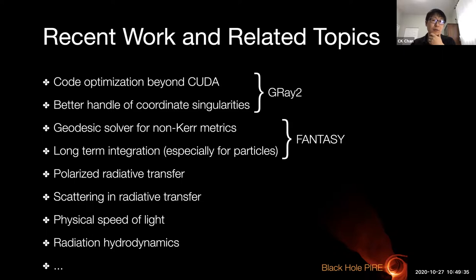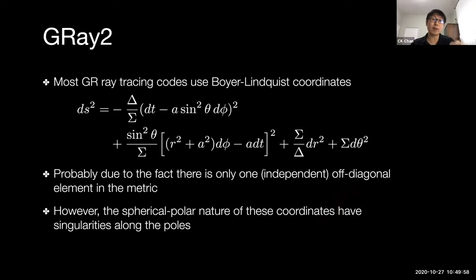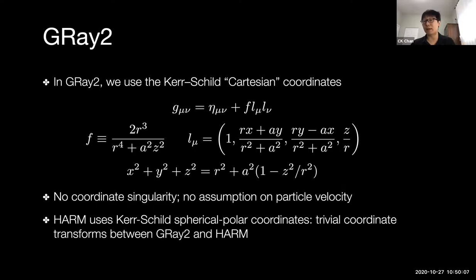In the second version of GRay, we moved from CUDA to OpenCL so the code runs on not just NVIDIA GPUs but also AMD GPUs and standard CPUs. We also switched coordinate systems from Boyer-Lindquist to Cartesian Kerr-Schild coordinates. Kerr-Schild coordinates have no coordinate singularity at the pole or at the horizon, which is numerically very convenient. Many GRMHD codes also use Kerr-Schild coordinates, making the mapping between ray tracing and GRMHD much easier.